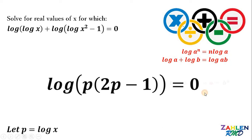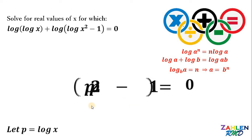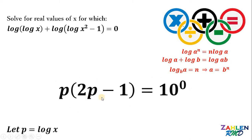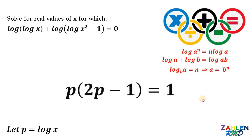Now let's convert using the rule: logarithm base b of a equals n can be written as a equals b raised to n. Therefore, our equation becomes p times (2p minus 1) equals 10 raised to 0, since logarithm of x is in base 10. And 10 raised to 0 equals 1.